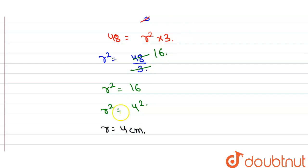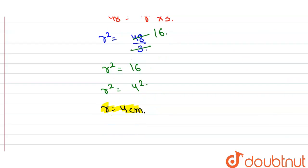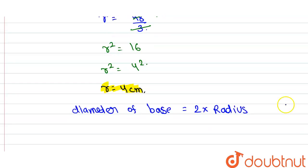But we have to calculate the diameter value. So the diameter of base is equals to 2 times of radius, which is 2 times 4.